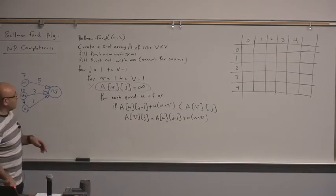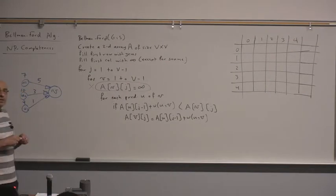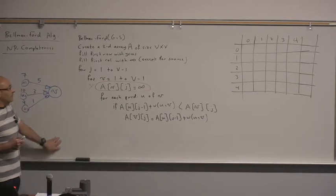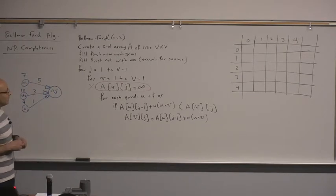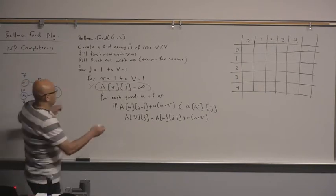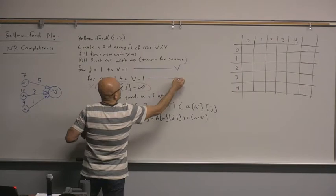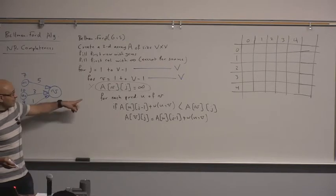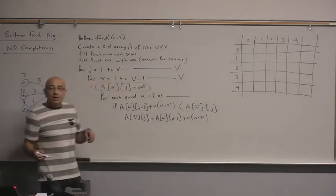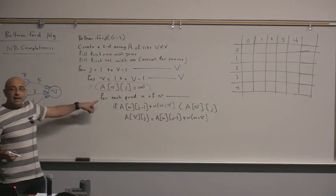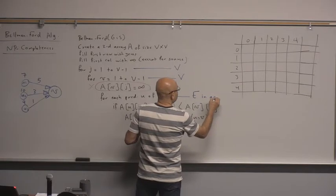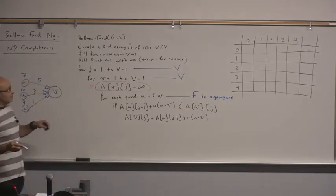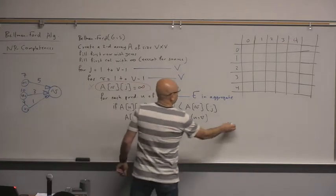I want to go through the analysis again. The main observation is that this outer loop runs V times and this inner loop also runs V times — so we have a doubly nested loop with V. But inside the loop we have another loop that goes through all the edges, which is E in aggregate.